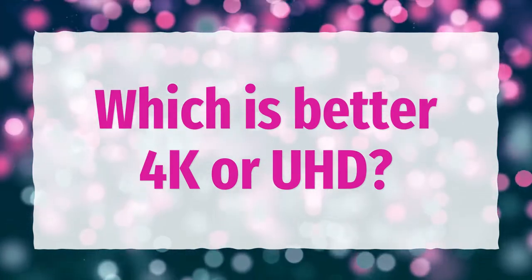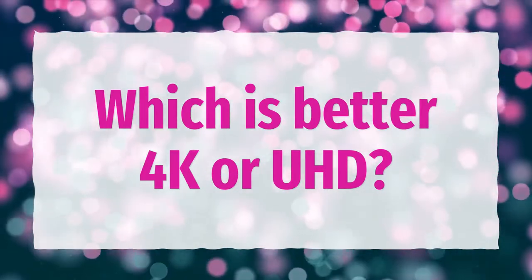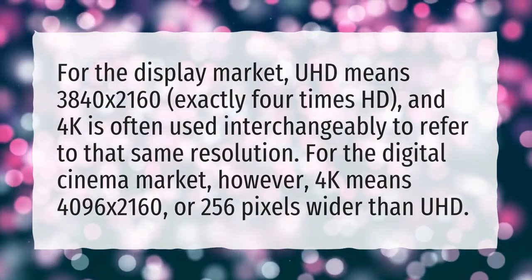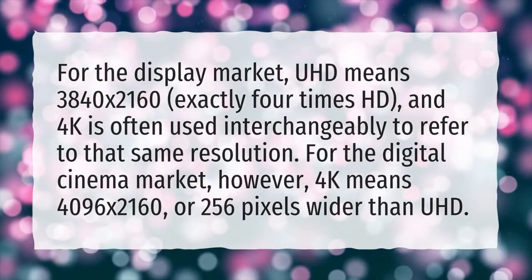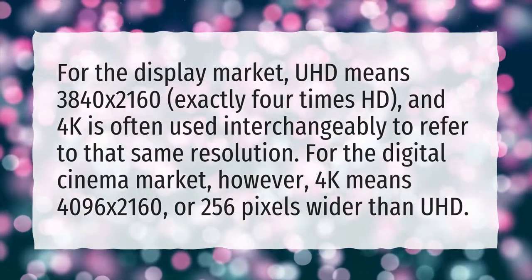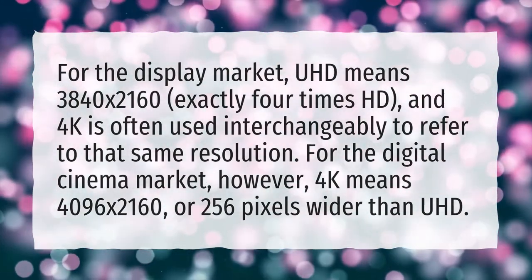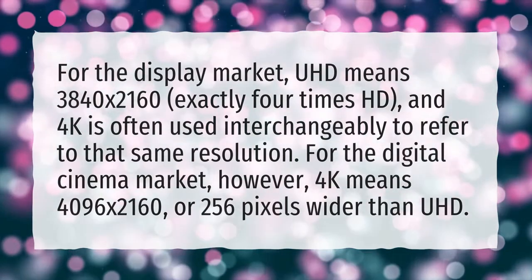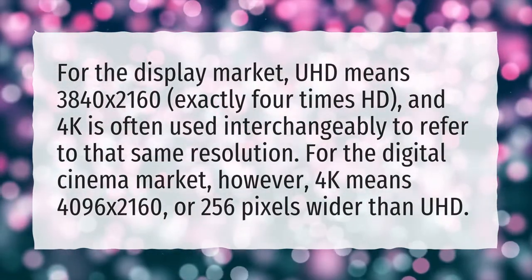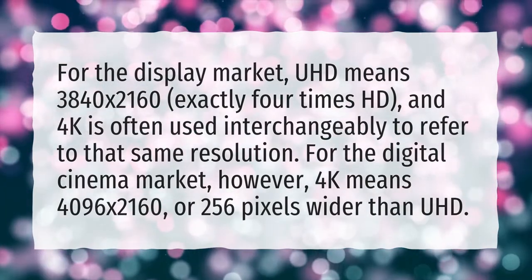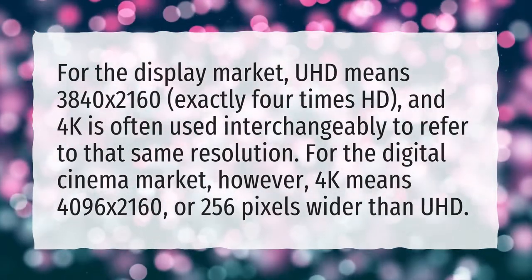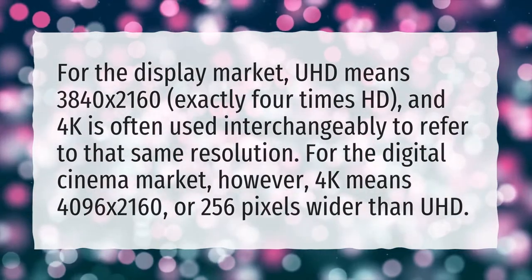Which is better, 4K or UHD? For the display market, UHD means 3840 by 2160 — exactly 4 times HD — and 4K is often used interchangeably to refer to that same resolution. For the digital cinema market, however, 4K means 4096 by 2160, or 256 pixels wider than UHD.